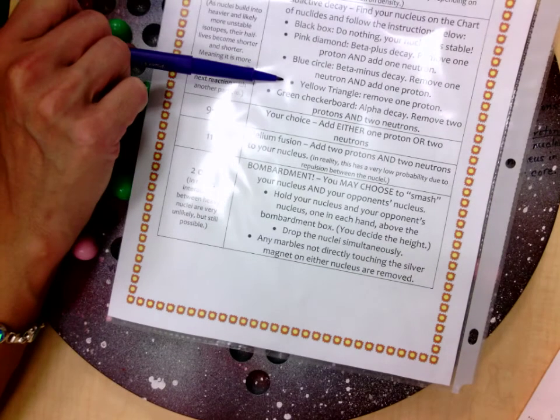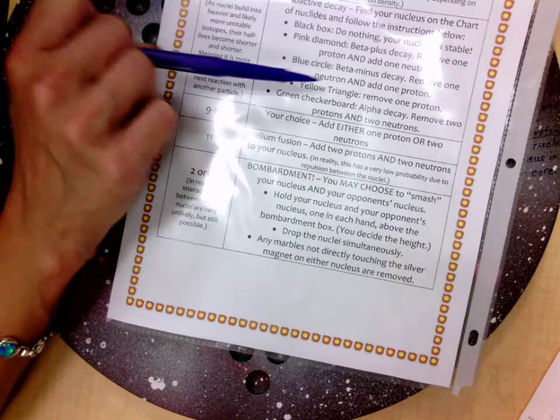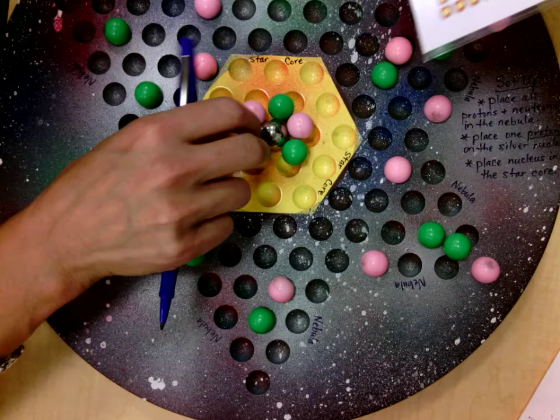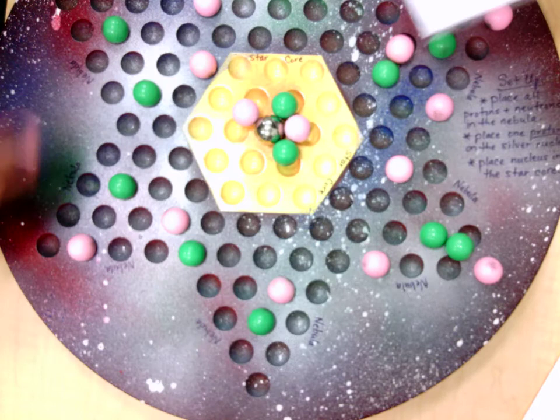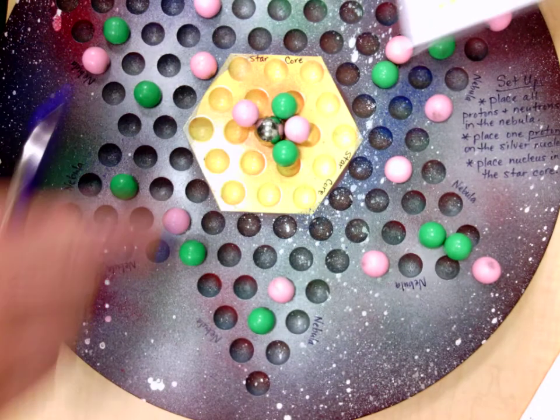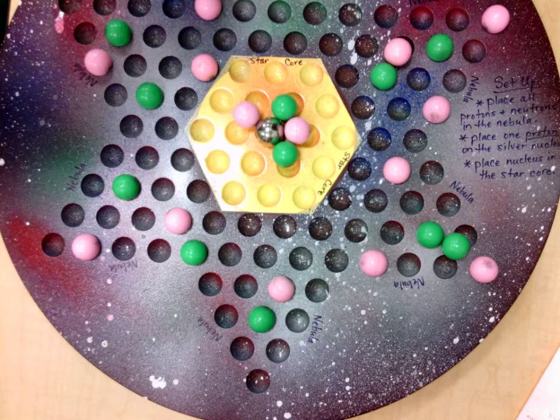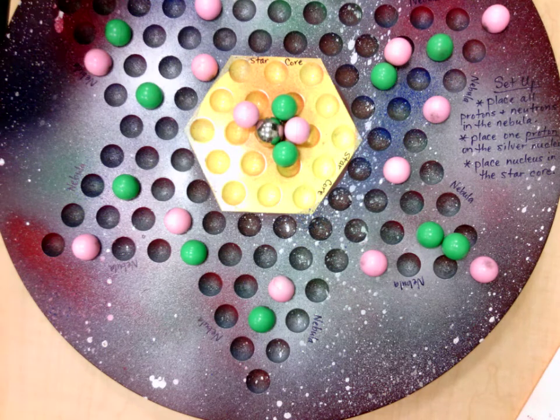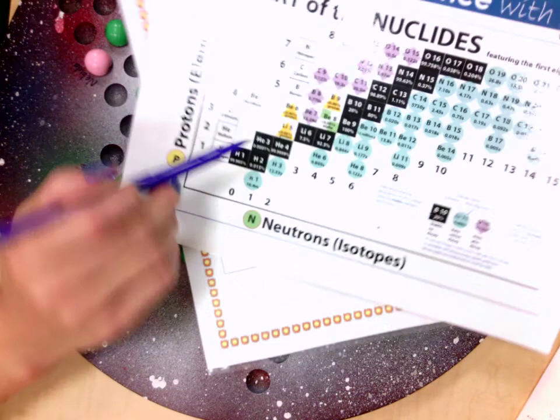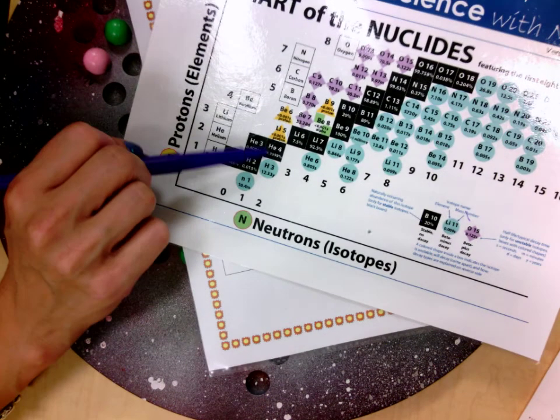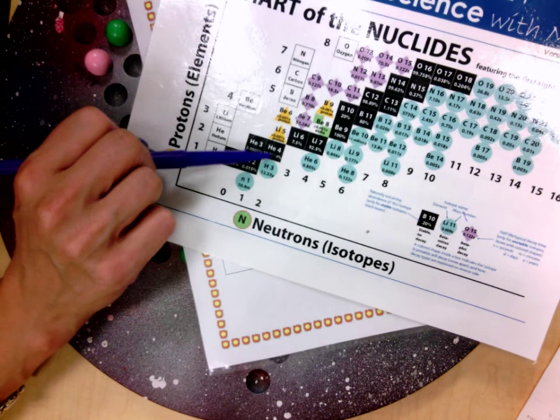So if I'm on that yellow triangle and I roll a seven or an eight, I have to look and see what kind of radioactive decay I go through. I would remove one proton. So I would have to take away a pink. Now I've got two protons, two neutrons. And I should be a stable atom after any type of radioactive decay. So I've got two protons, two neutrons. I'm helium four.